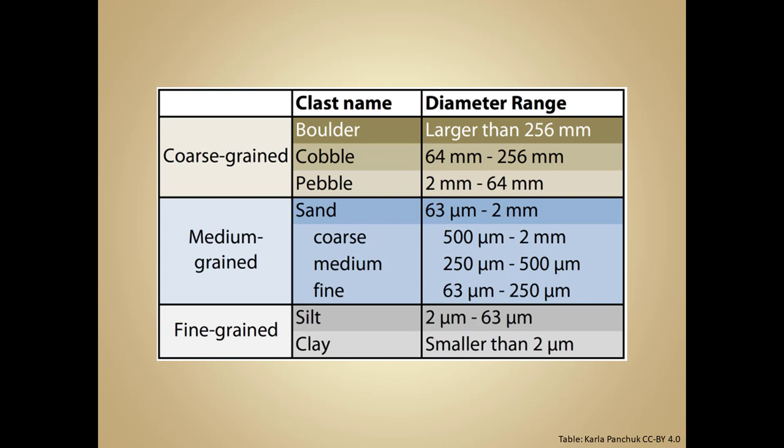The largest grain size is called gravel — a collective term for all rounded particles bigger than about 2 millimeters. We can break that down into three subcategories. The smallest gravel size is pebbles, ranging from about 2 millimeters to a little over 6.5 centimeters. From about 6.5 centimeters to about 25.5 centimeters we classify as cobbles, and anything bigger than about 25.5 centimeters is considered a boulder.